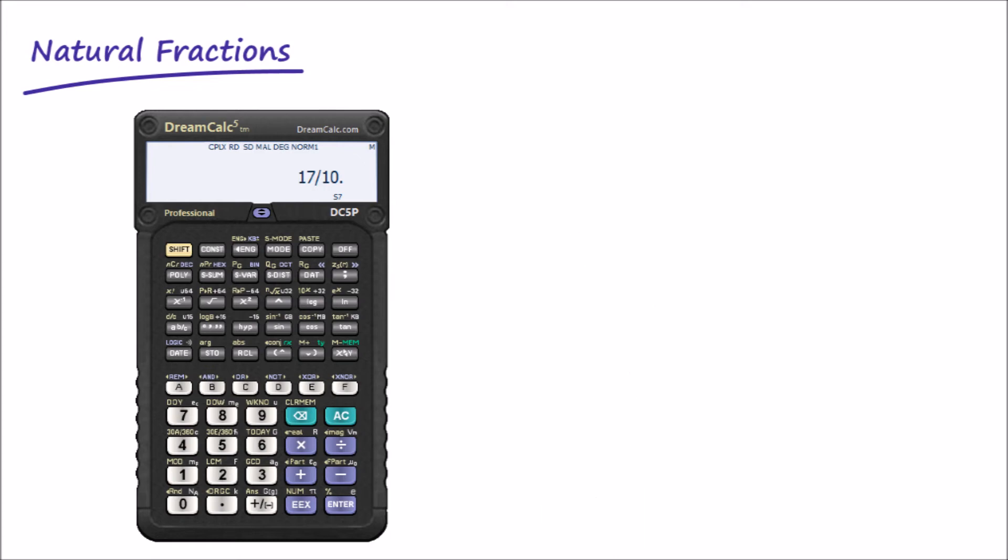Finally, let's look at how the fraction key deals with an irrational number. An irrational number is one which cannot be expressed as a ratio of two integers. Pi is perhaps the most famous example, with digits following the decimal point that extend toward infinity. The pi constant is located on the DreamCalc exponent's input key. So let's see what happens when we try to convert it to natural fraction form.